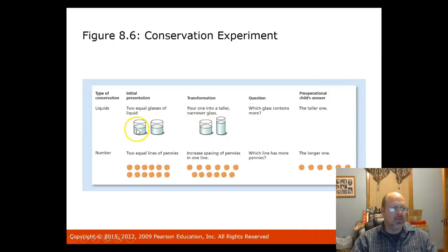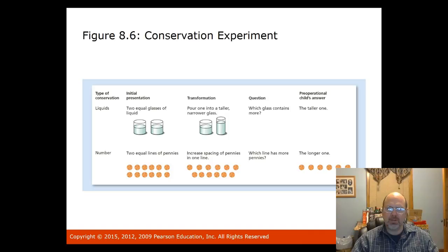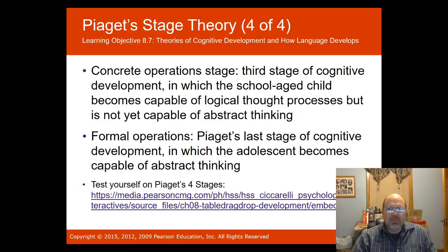Irreversibility in Piaget's theory is the inability of a young child to mentally reverse an action. An example of conservation: two equal glasses of liquid are shown to a child, then one is poured into a taller, narrower glass. The child in the pre-operational stage will say the taller glass contains more water. Similarly, two equal lines of pennies are shown, then one line is spaced out — the child says the longer line has more pennies, concentrating on the appearance rather than the quantity.